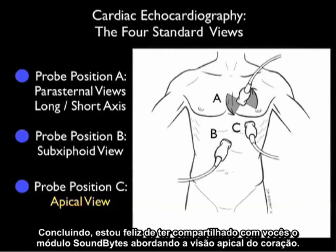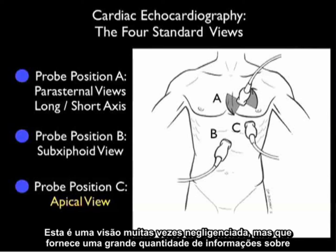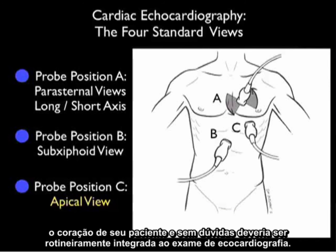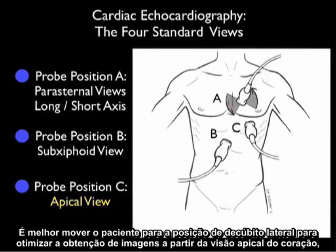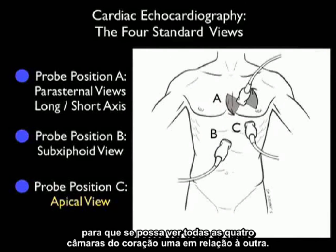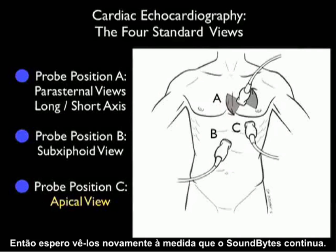In conclusion, I'm glad I could share with you this SoundBytes module going over the apical views of the heart. This is an often neglected view, but one that gives a great deal of information about your patient's heart and really should be routinely integrated into the cardiac echo examination. It's best to move the patient into the left lateral decubitus position to optimize imaging from the apical view of the heart to see all four chambers in relation to one another. I hope to see you back as SoundBytes continues.